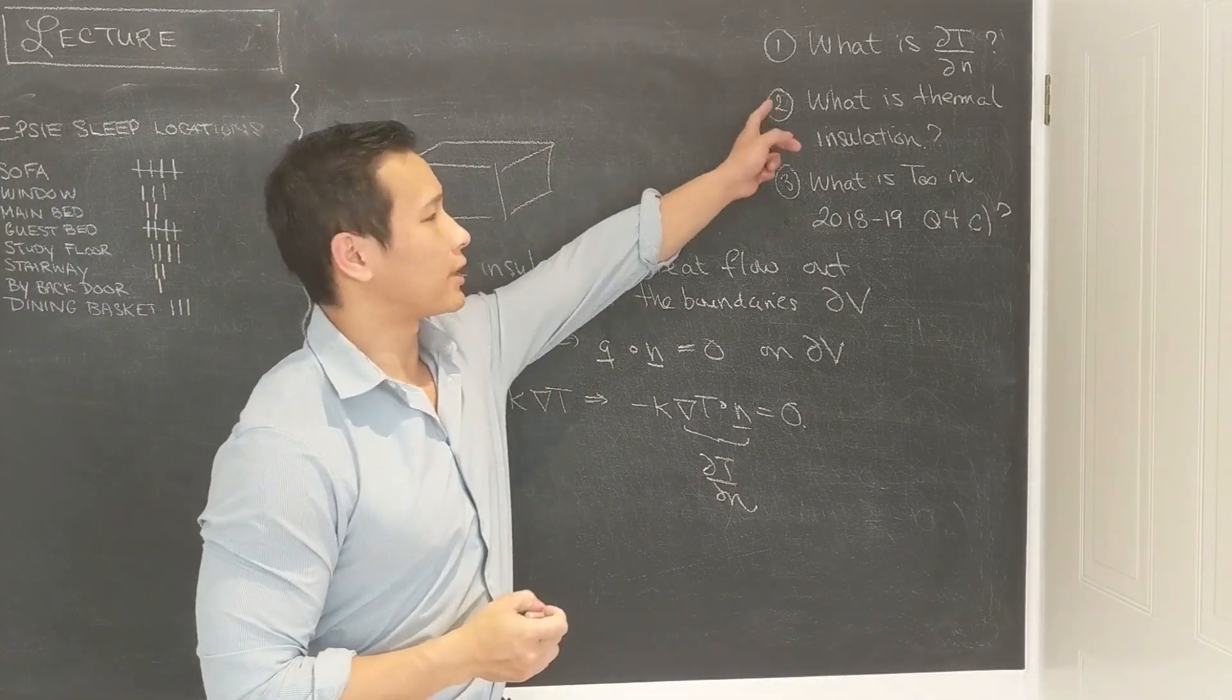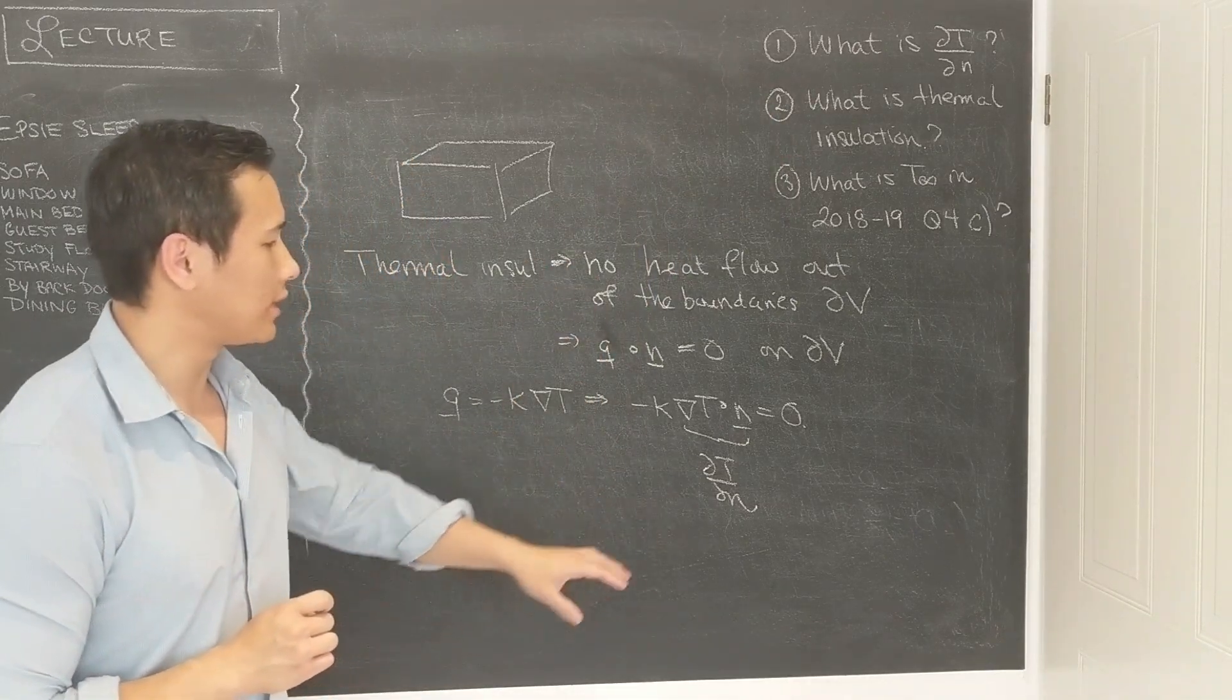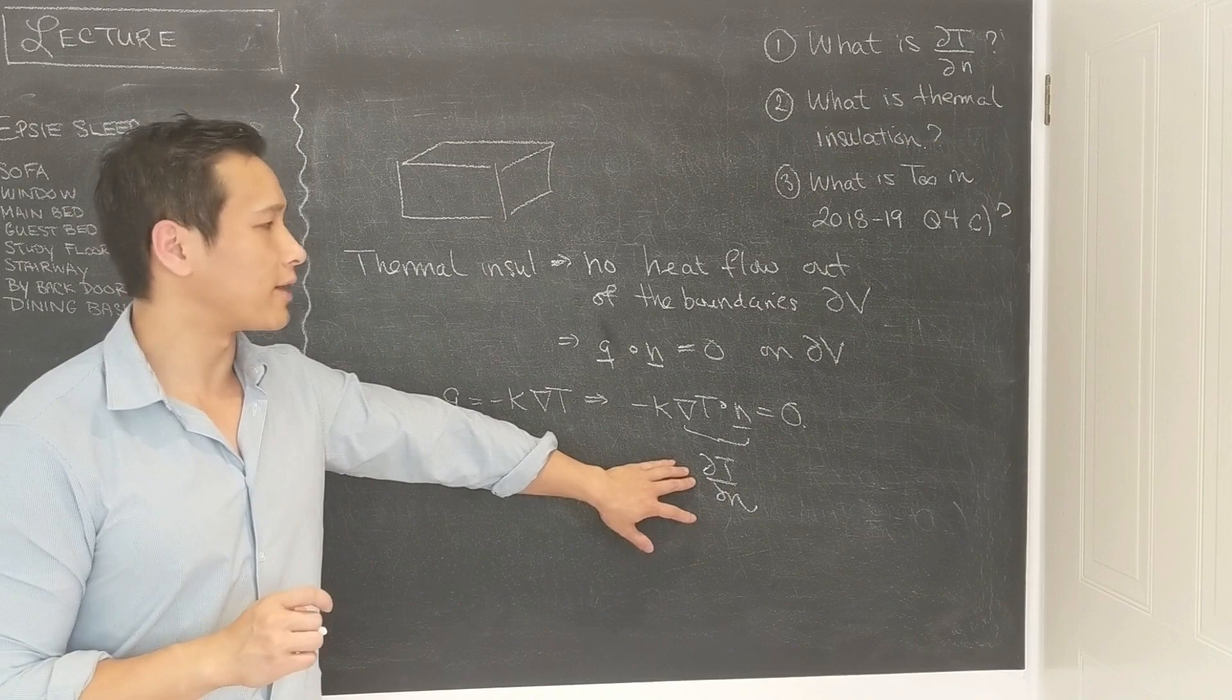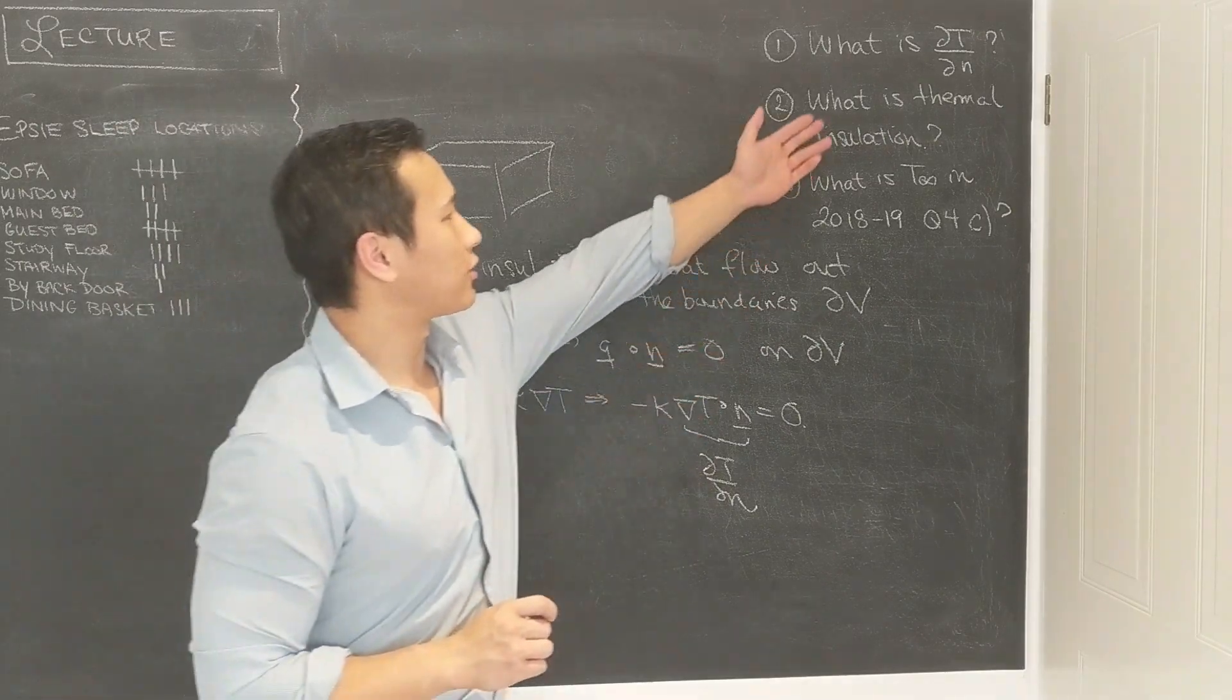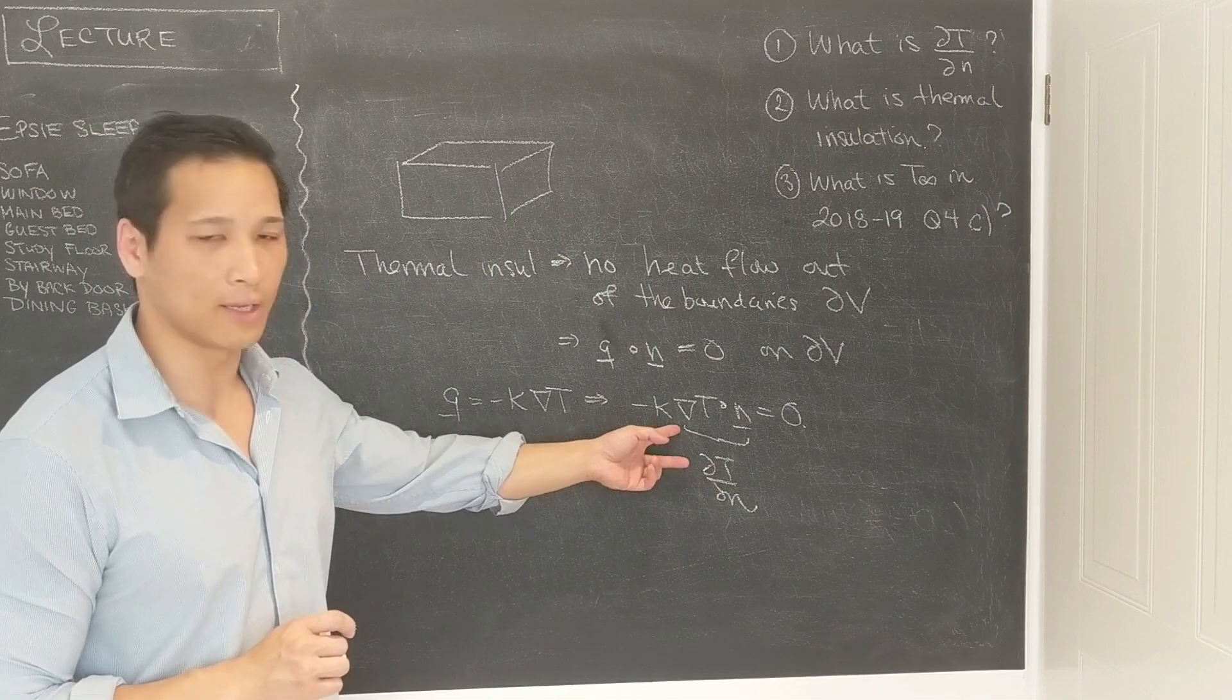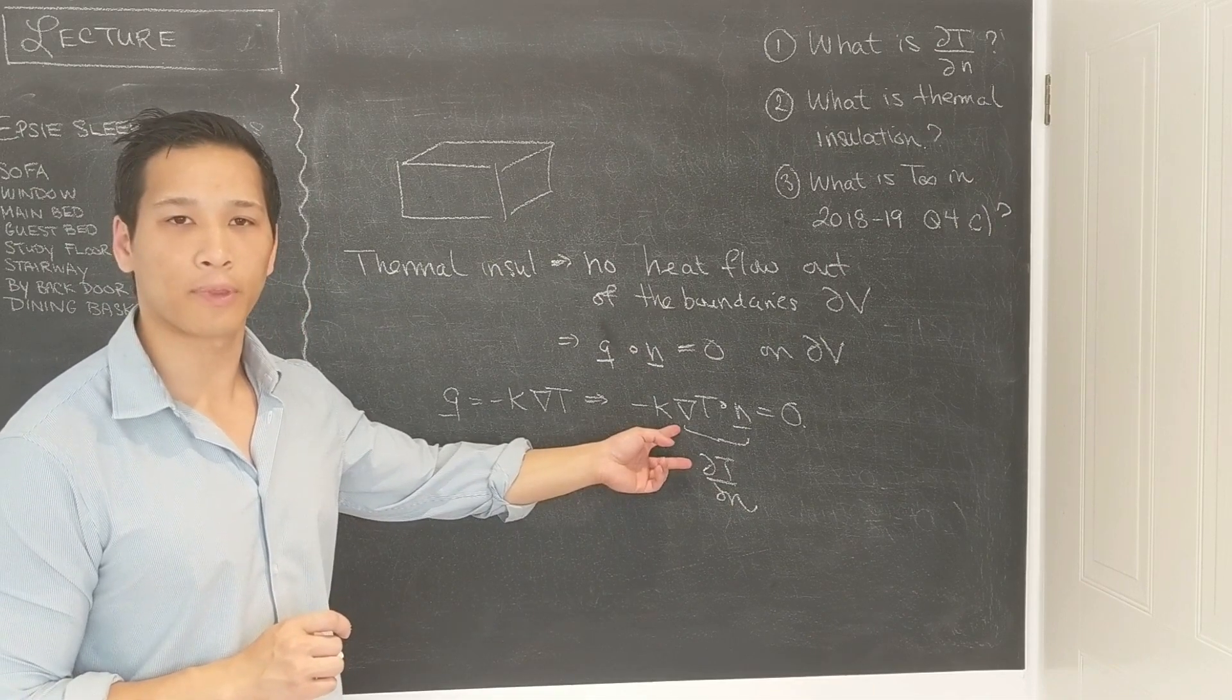So that's the connection between item 1 and item 2. Thermal insulation means that the normal derivative, dT/dn, is equal to 0 on all the boundaries, and dT/dn is calculated in this fashion here by taking the gradient of t and then dotting that with n.